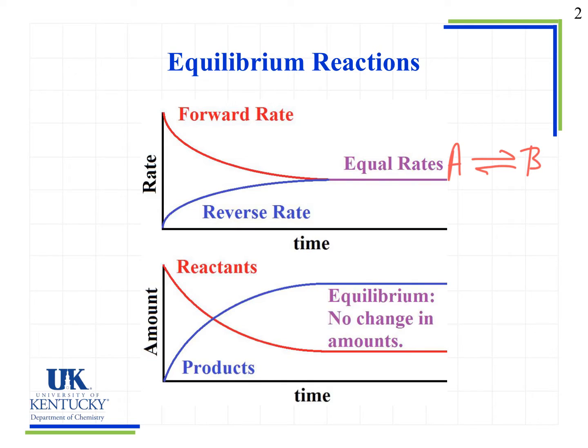Notice that at the point we get to equilibrium, we see that our reaction rates are equal and that the amount of products and reactants is not changing. The reaction will still continue to run. We will still have A going to B and B going to A, but they will be happening at the same rate.